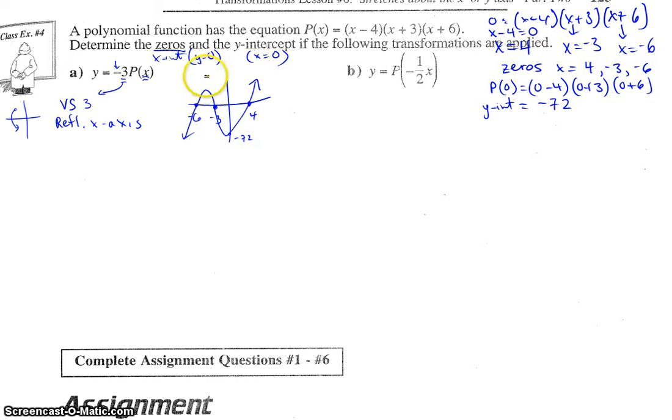But if we stretch vertically by a factor of 3 about the x-axis, these x-intercepts, which are on the x-axis, won't change, right? If they stretch vertically, we multiply the y-coordinates. And these y-coordinates are all 0. So 0 times 3, still 0.